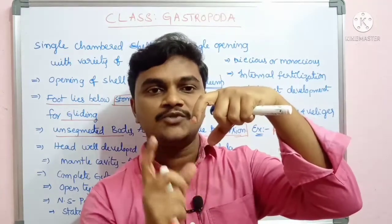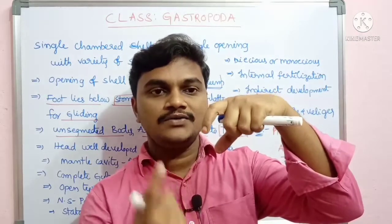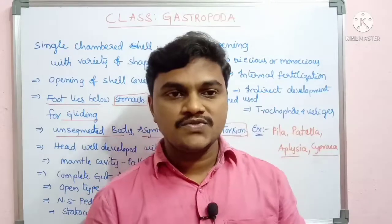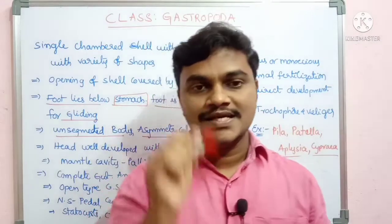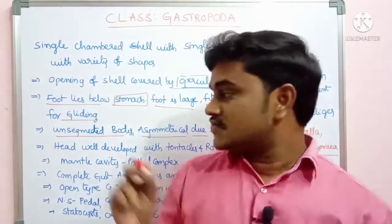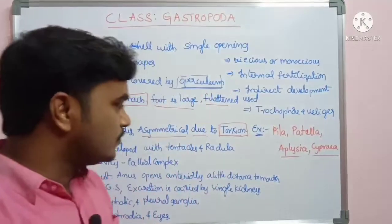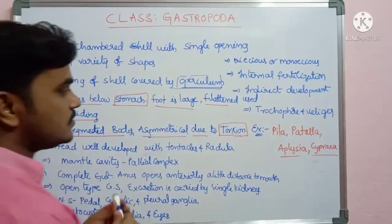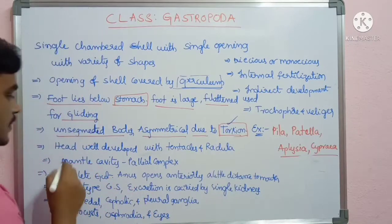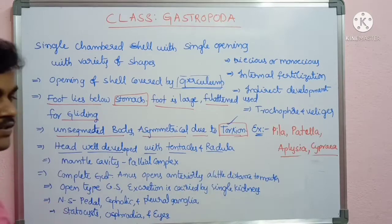The shell is coiled, and the viscera is also coiled, resulting in an asymmetrical condition. This asymmetry is due to torsion, which is the coiling of the viscera. The head is well developed with tentacles and a radula.